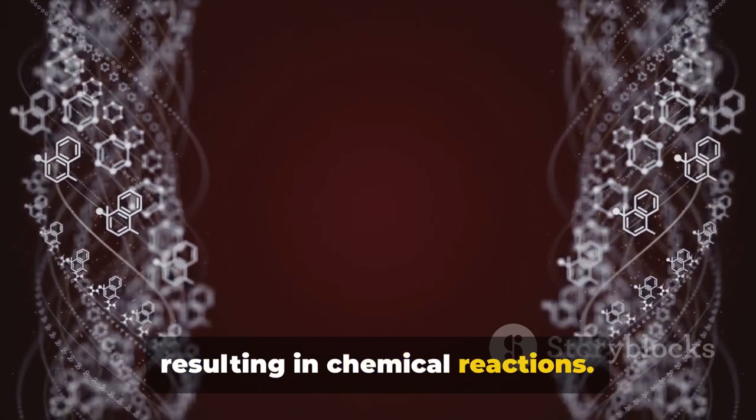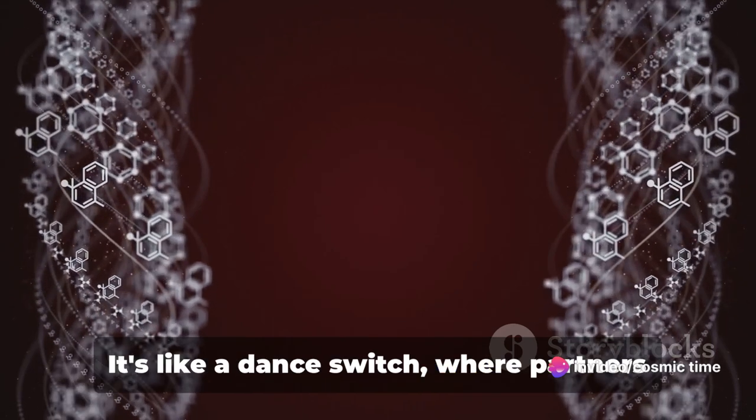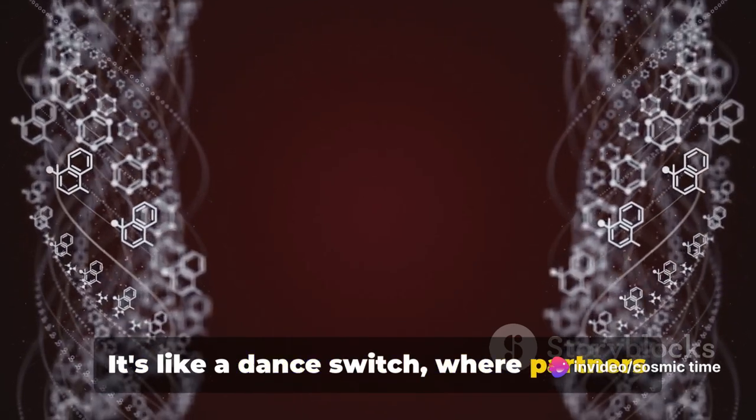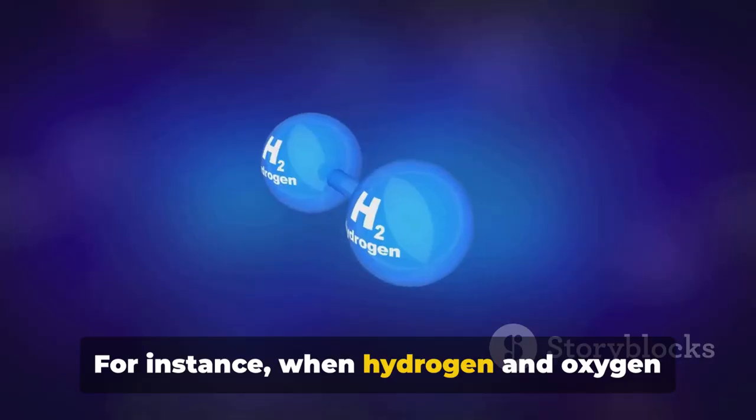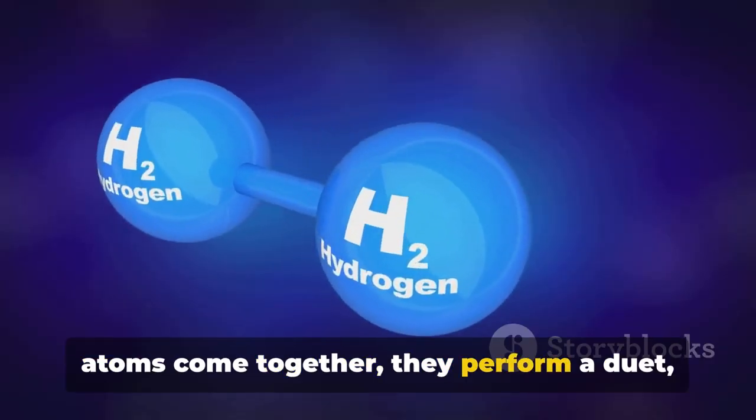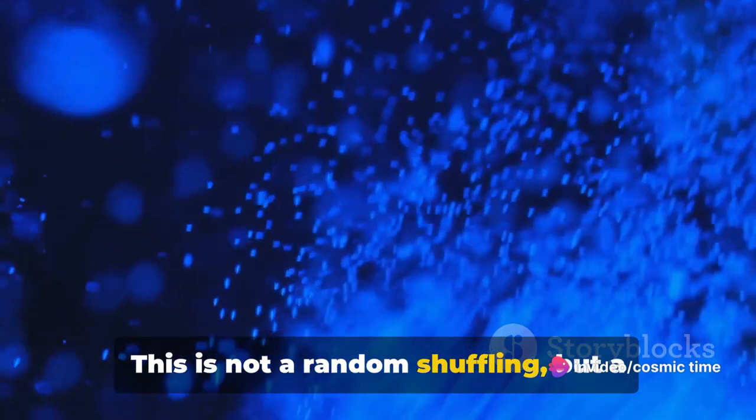In a chemical reaction, atoms rearrange themselves to form new substances. It's like a dance switch, where partners are exchanged in the middle of a performance. For instance, when hydrogen and oxygen atoms come together, they perform a duet, rearranging themselves to form water. This is not a random shuffling, but a precise and orderly process following the laws of nature.